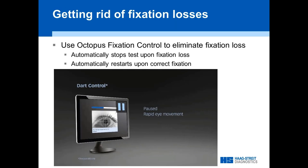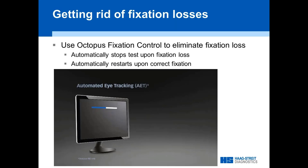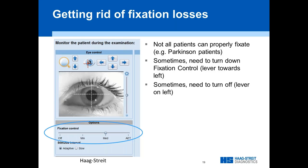People coming over from the Humphrey perimeter sometimes say — where's my gaze tracker? And the answer is: you don't need it because you don't have fixation loss. Just be aware that not all patients can properly fixate — for example, Parkinson's patients may have an unsteady pupil that the eye tracker may not catch. There is an option to turn this down if needed, but generally, letting it run is a great safety net.